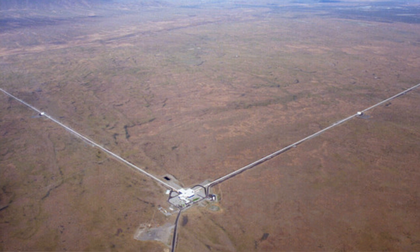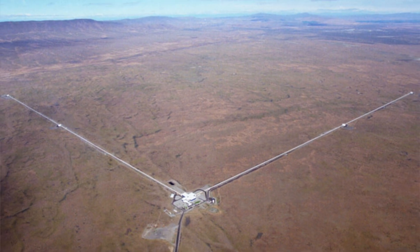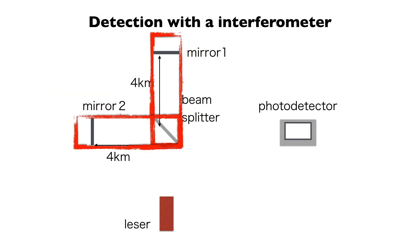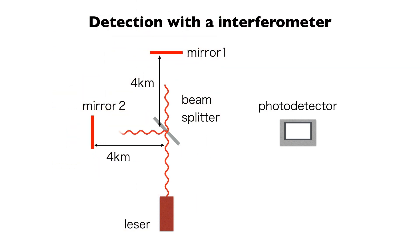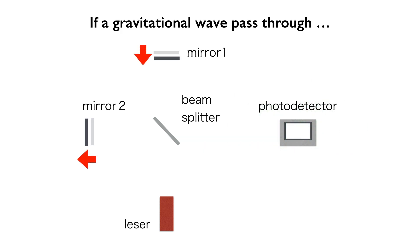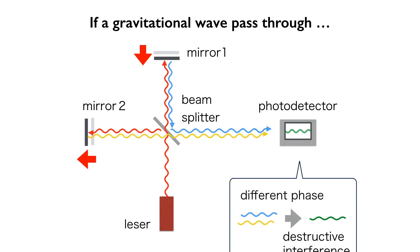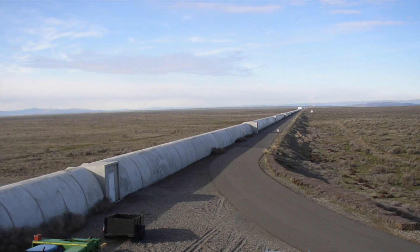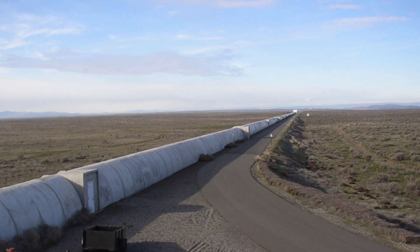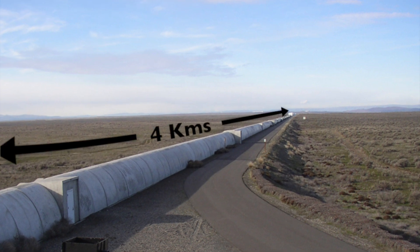LIGO uses an interferometer to measure the distance change caused by gravitational waves. The experiment has two orthogonal laser arms. There is a mirror at the end of each arm to reflect the laser back, so that when the distance of the two arms changes due to gravitational waves, you can see the interferometric pattern change. One of the factors to increase sensitivity is to have a long arm length — in the case of LIGO, it's 4 km.